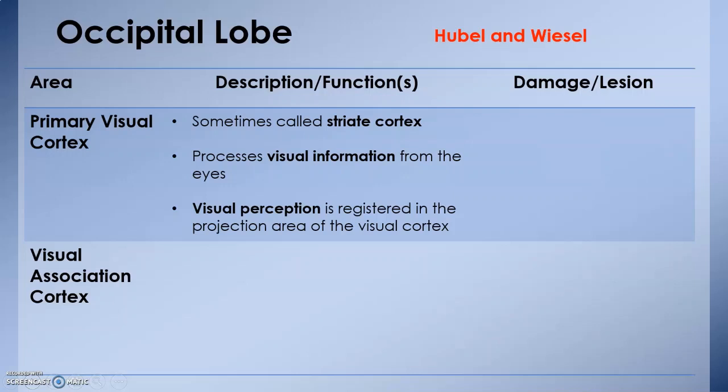Visual perception is registered in the projection area of the visual cortex. As we discussed in the last video about projection and association areas, the primary visual cortex is a projection area, so it deals with the input of visual information.